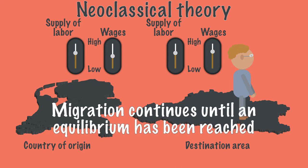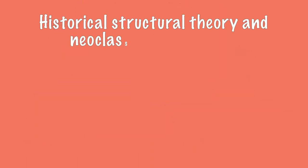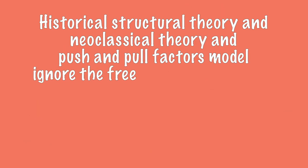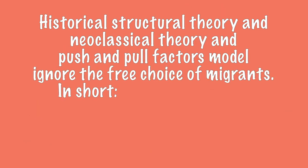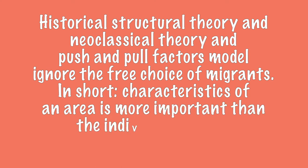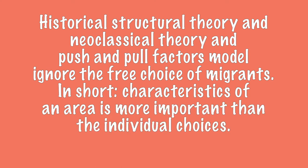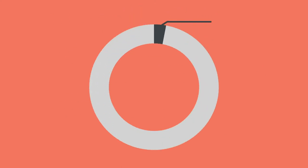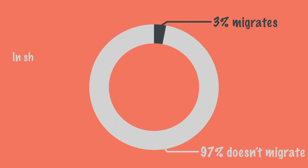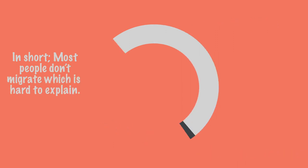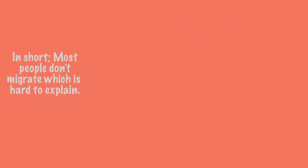But the historical structural theory, and neoclassical theory as well as the push and pull factors model, ignore the free choice of migrants. For example, about 3% of the world's population is migrant, which means that the other 97% does not migrate and makes the choice to stay somewhere. Characteristics of areas can also be positive for one migrant, and therefore a reason to go to that region, while for other migrants it may be a reason to leave.